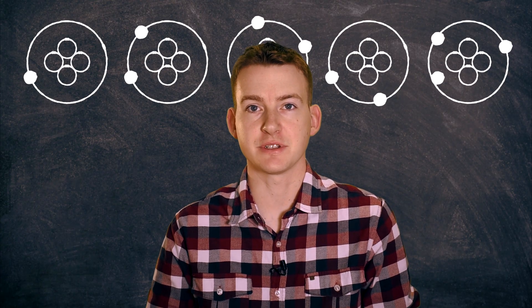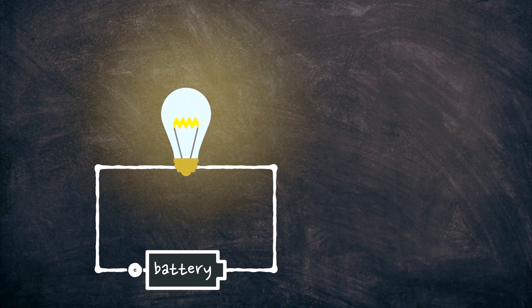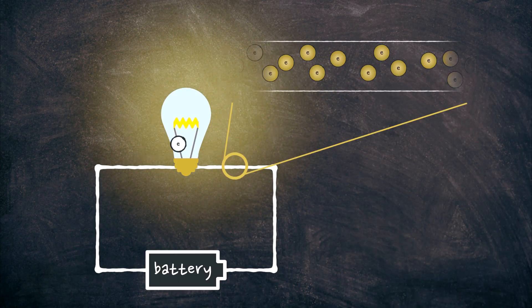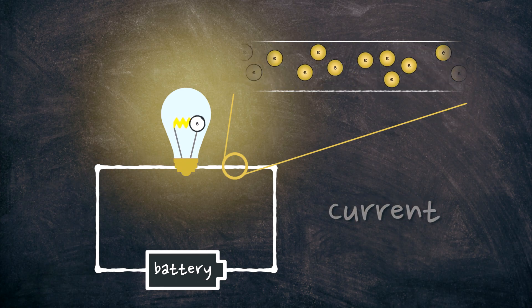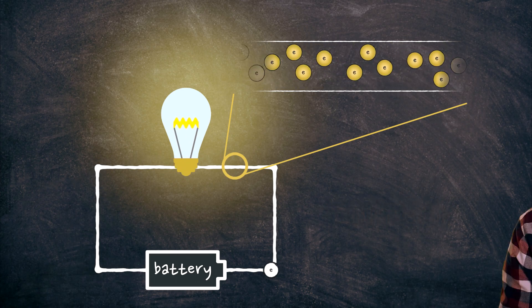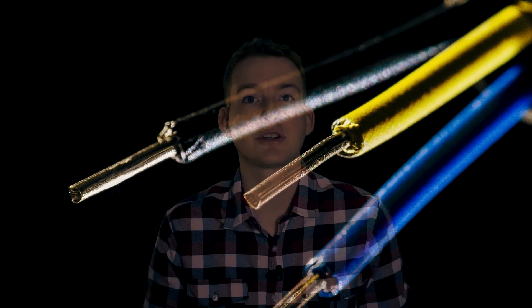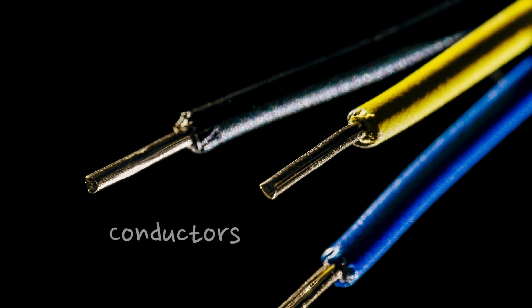Now as I mentioned, electrons can flow from atom to atom within some materials. It's this flow of electrons that allows electricity to be transferred. This flow of electrons is what a current is. Some materials allow these electrons to be moved a lot easier than others. Metals are materials that generally allow electrons to move quite easily, and that's why metals make very good conductors of electricity.